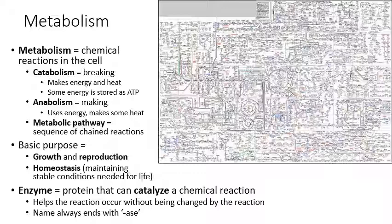Usually when we have a task to get done in the cell involving chemical reactions, it'll be more than one chemical reaction that needs to occur. They'll be a sequence of reactions that occur in a certain order, and we call that a metabolic pathway. For instance, taking glucose as a food molecule and breaking it down to get energy and store it as ATP is not just one reaction — it's a very long chain of chemical reactions that all need to occur in order. We call that a metabolic pathway.